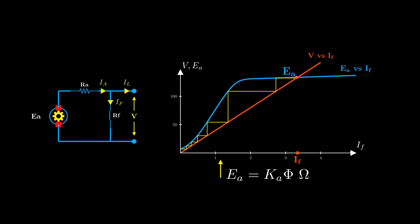So the voltage buildup relies on three key factors: residual magnetism, armature rotation, and the regenerative action of the shunt field.